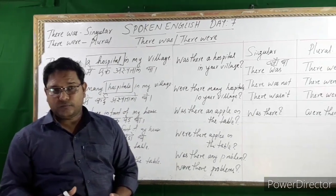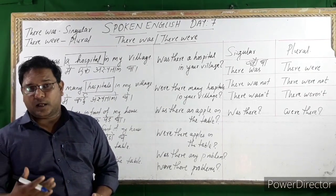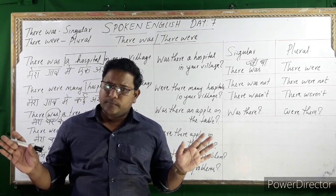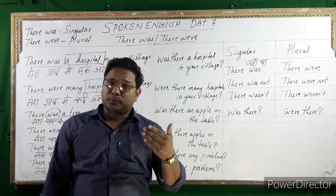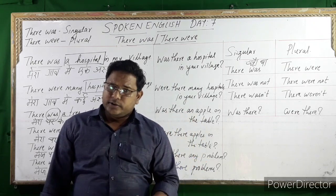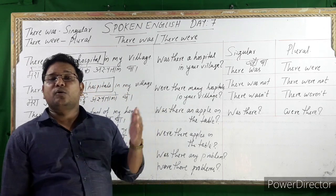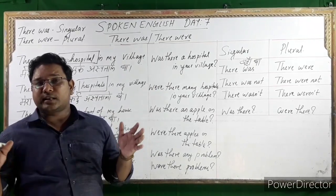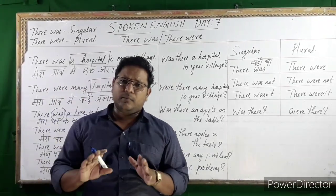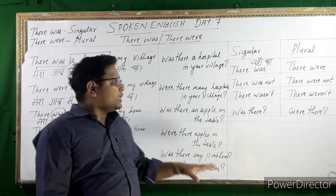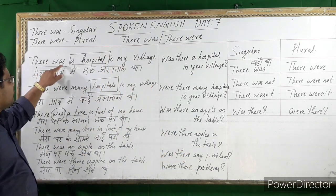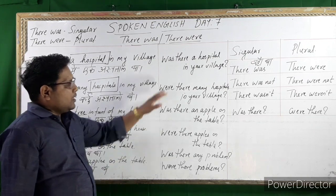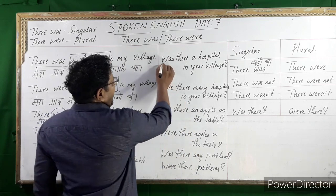'There was a pond near my home.' 'There was a bridge.' 'There was a good school in my village' — meaning there was a very good school in the village before. See, this is how we use 'there was' and 'there were': singular uses 'was' and plural uses 'were.' Now let's see how we can make questions.